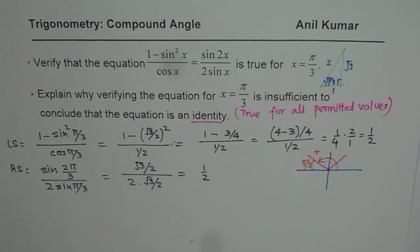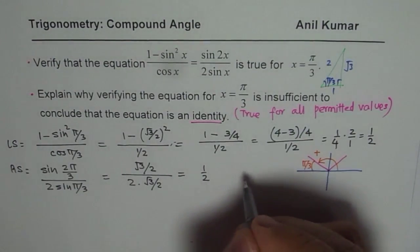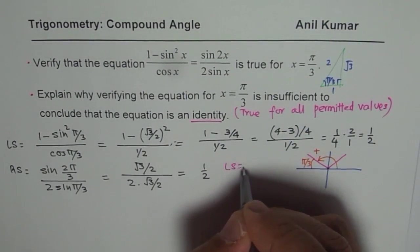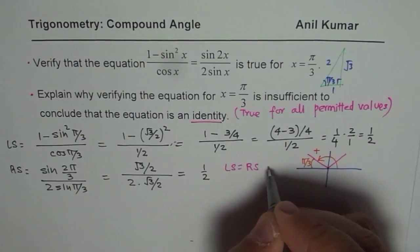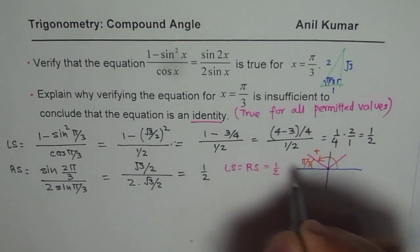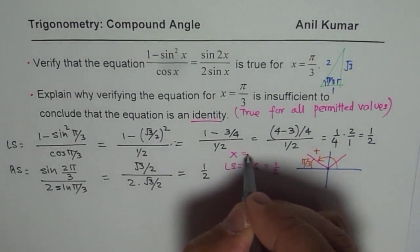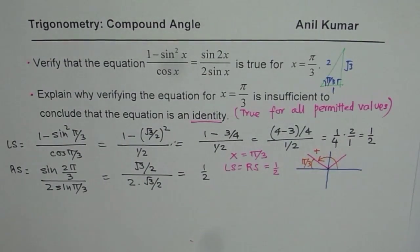So what we see here is that the left side equals the right side equals 1/2 when x = π/3. That is what we conclude.